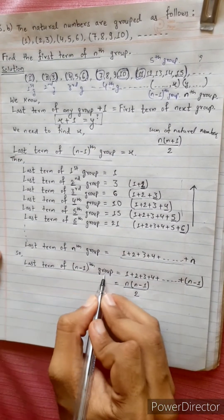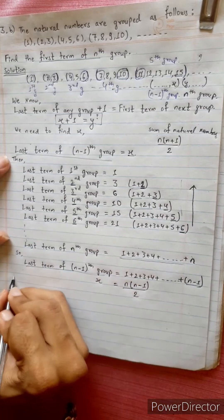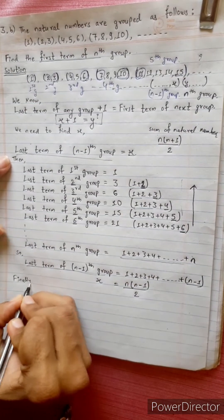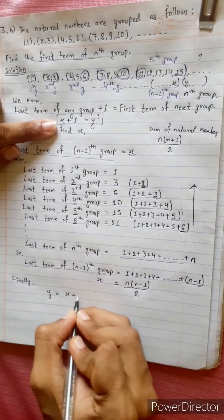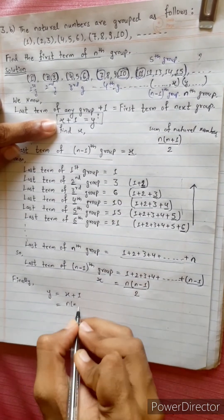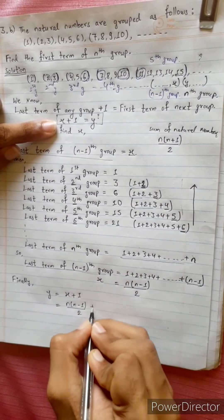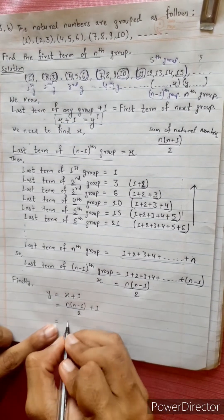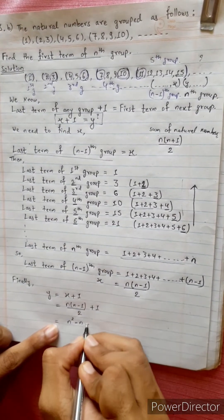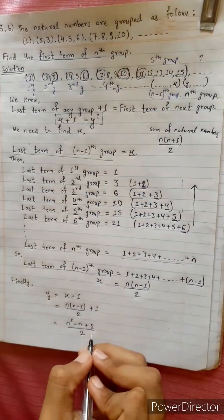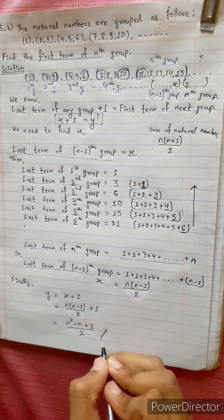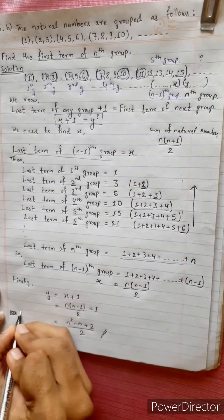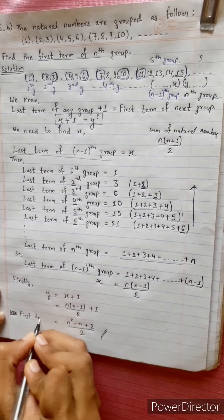The last term of the n-1 group is x. The x value is finally: y equals x plus 1, equals n minus 1 times n divided by 2 plus 1, equals n squared minus n plus 2, all divided by 2. So the answer is n(n+1)(n+2) divided by 2.